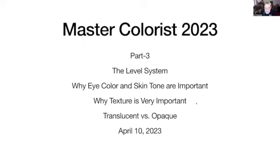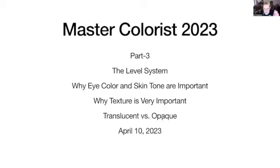Here's what we're going to talk about today — only four topics. The level system: I want to tell you where it comes from and a few interesting facts about it. Then eye color and skin tone, and why they're important and what they have to do with hair color. The third thing is texture and why it's very important, and then the last thing is translucent and opaque, which have very specific meanings with regard to hair coloring.